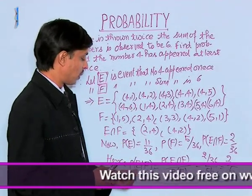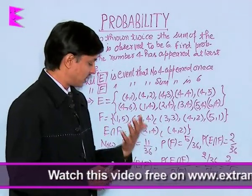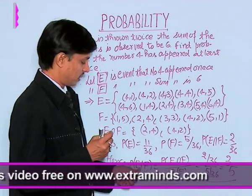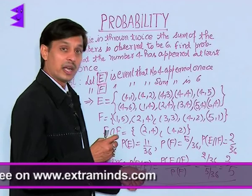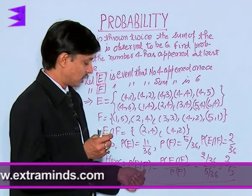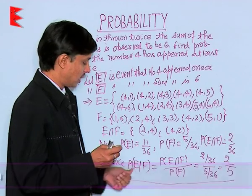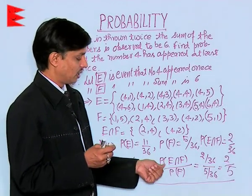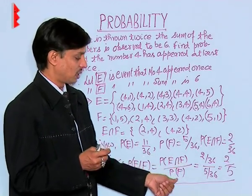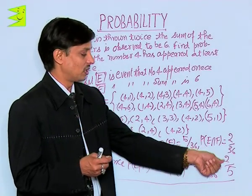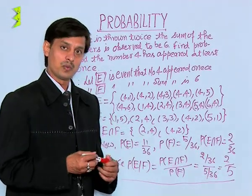We want to know the probability of E given F. In other words, what is the probability that 4 appears once if it is already known that the sum is 6? Using the formula P(E|F) = P(E∩F)/P(F) = (2/36)/(5/36) = 2/5.